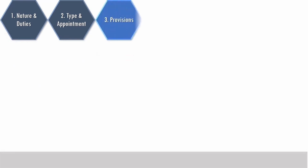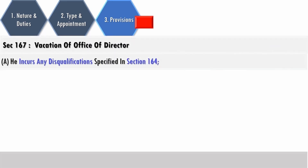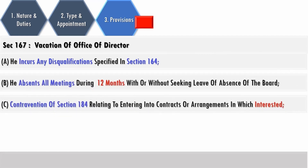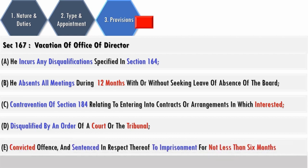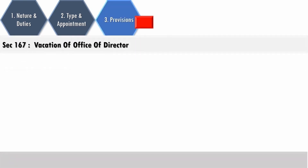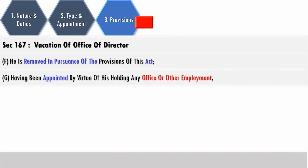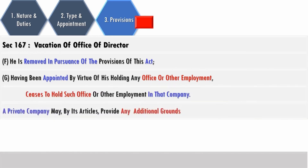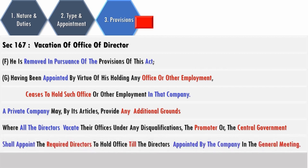Vacation of office results under Section 167 where a director incurs a disqualification specified in Section 164, absents themselves from all meetings during 12 months, contravenes Section 184 relating to entering into contracts in which they are interested, is disqualified by an order of a court or tribunal, or is convicted of an offense and sentenced to imprisonment for not less than six months. Vacation of office also results when a director is removed in pursuance of the provisions of this Act, or having been appointed by virtue of holding any office or other employment, ceases to hold such office or employment in the company. A private company may by its articles provide any additional grounds for vacation.